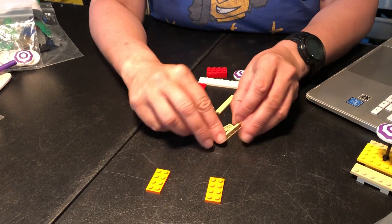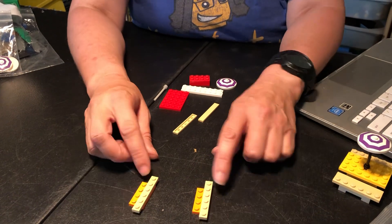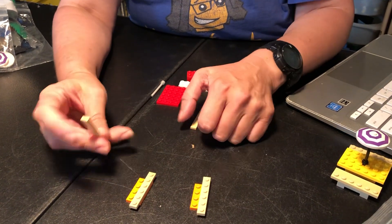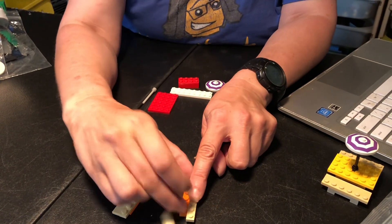You have two 2x4 plates and two 1x6 plates and you stick them on the 2x4s along one side and then you put a tie on the other side.